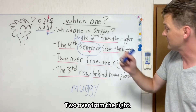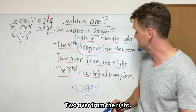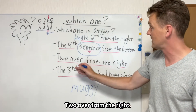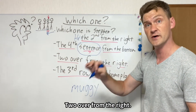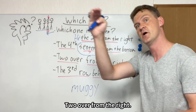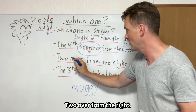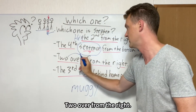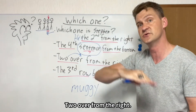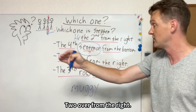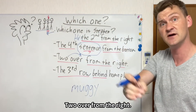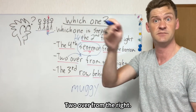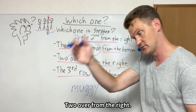Another way you might say — 右から2番目 — is 'two over.' Two over. Over means you're moving. Two over from the right. 右から2番目、右から2つ.